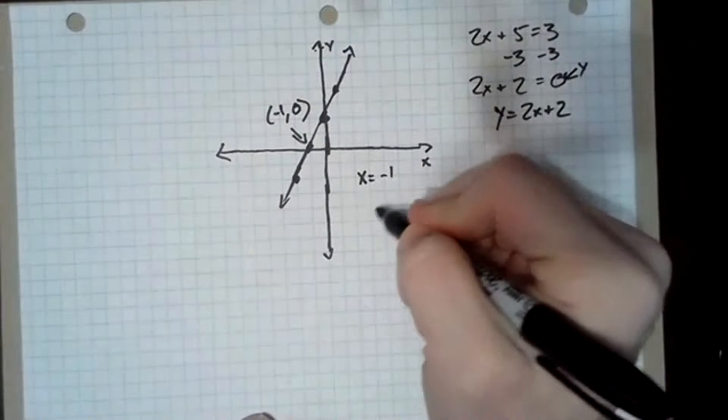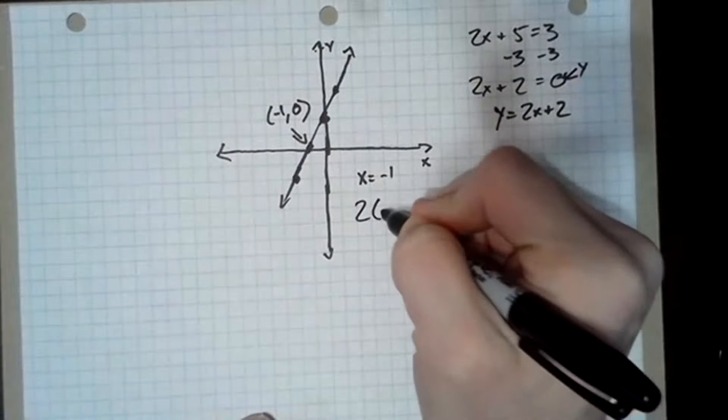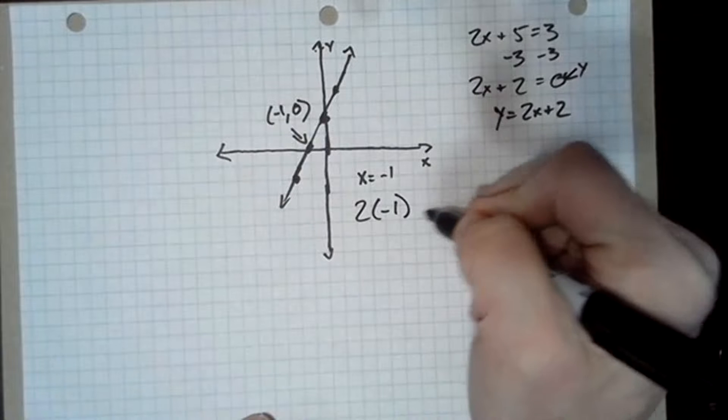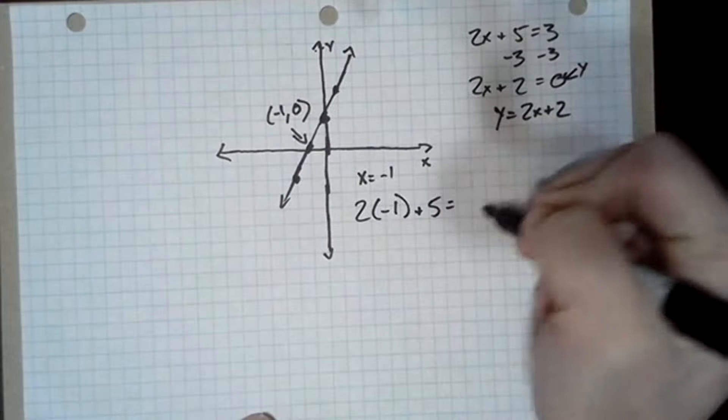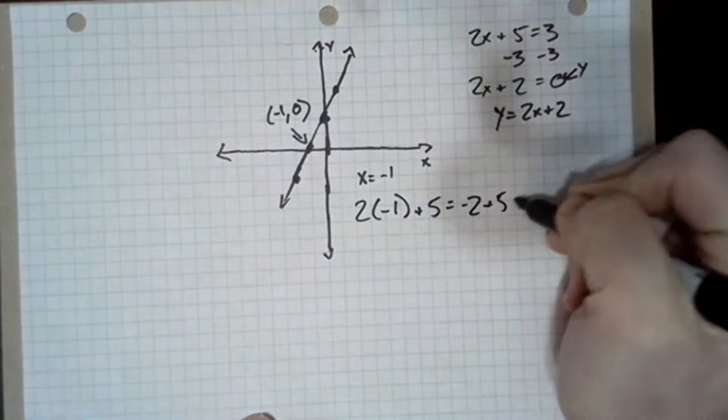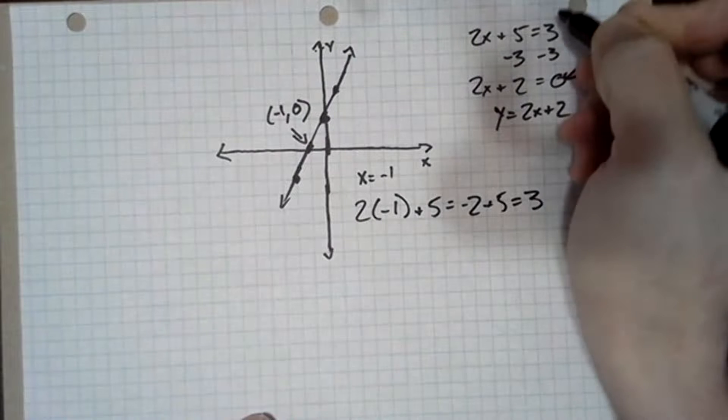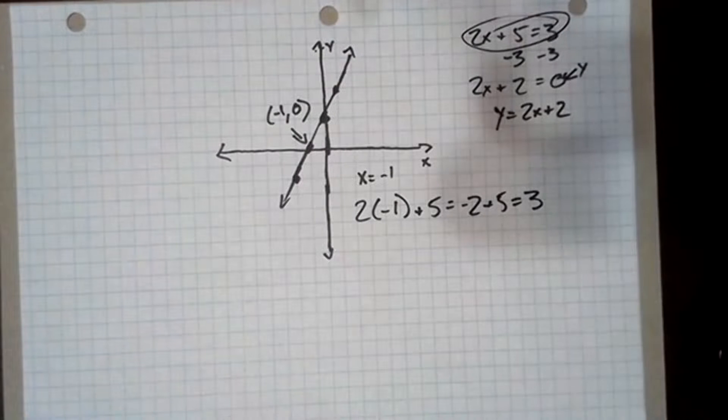We try this just to make sure we plug it into our equation. 2 times negative 1 plus 5 is negative 2 plus 5, which is 3. So this equation here is true if x is negative 1.